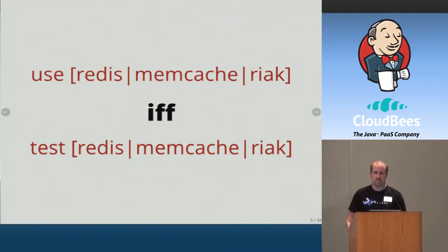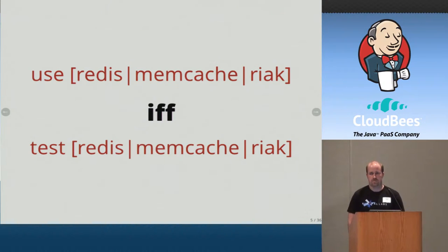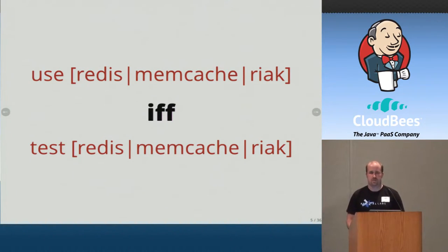Because we're testing all the time, we're testing whatever we're going to use. If we're using Redis, Memcache, React, Mongo, or whatever crazy dependency, we're actually going to test that as well — we're not going to stub it out. Which means our CI environments need to be dynamic. Developers need to be able to add the dependencies they need without having to ask somebody to configure it on the box.